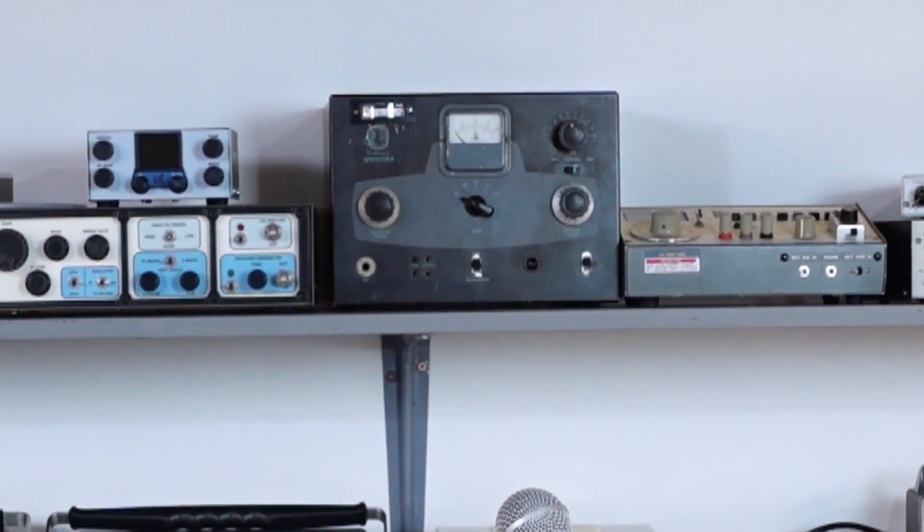Regular viewers will certainly recognize this EF Johnson Viking Adventurer transmitter. Its distinctive square shape and dark color really stands out from all the other gray rectangular metal boxes around it. It's been quietly sitting behind me practically since the beginning of my channel. This particular Adventurer has a very personal connection to me, but before I get into that, I want to spend a few minutes talking about what the Adventurer is for anyone who's not familiar with it.